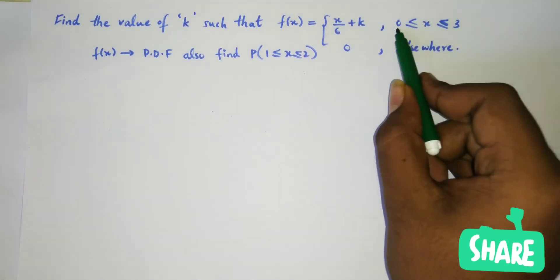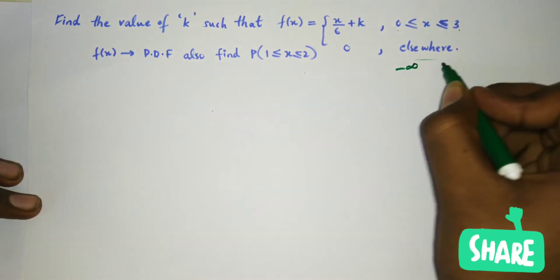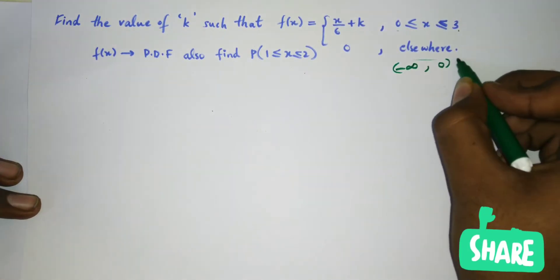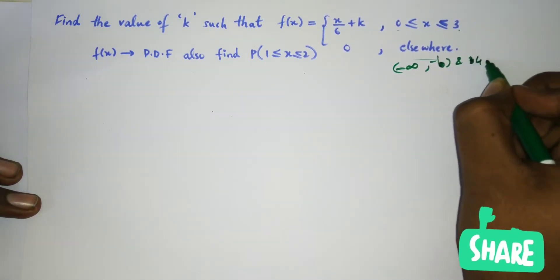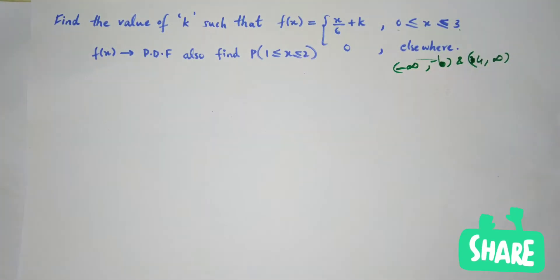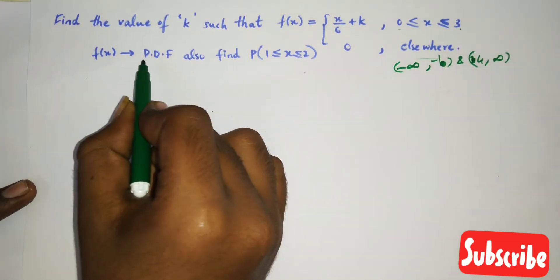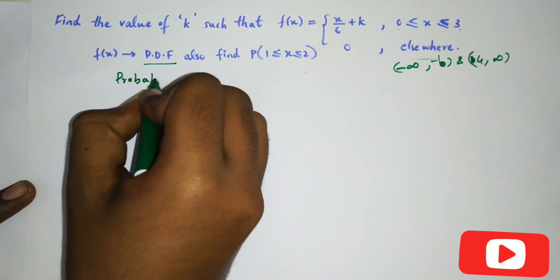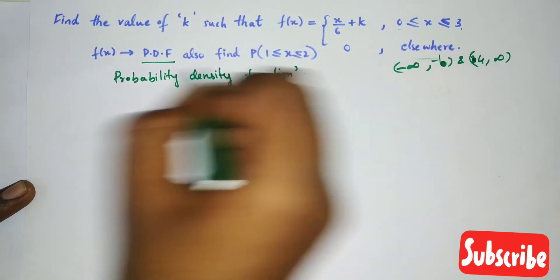From the function definition, we can see that from 0 to 3 the function values are given, but elsewhere — from minus infinity to 0 and from 3 to infinity — the value is 0. Since the distribution extends over an interval (not finite discrete points), it is not discrete. Whenever a function is distributed over certain intervals like this, we say it is a continuous probability distribution. It is also given that f(x) is a PDF — probability density function.